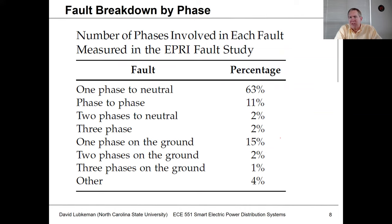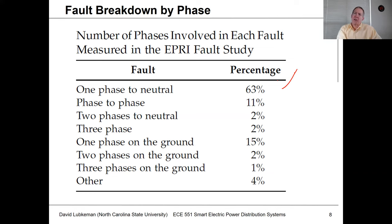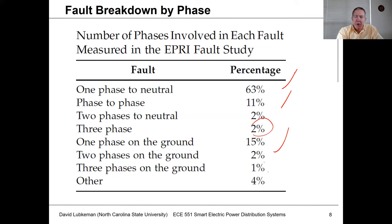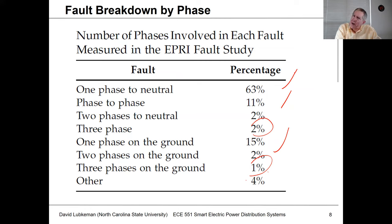As for the number of phases involved in a fault, the study Short references shows that most faults are single phase to neutral — that's really the main type of fault that occurs, which is why we spend a lot of time on single-phase faults. You also have phase-to-phase faults and phase-to-ground faults. A three-phase fault, either ungrounded or grounded, actually has the lowest incidence.